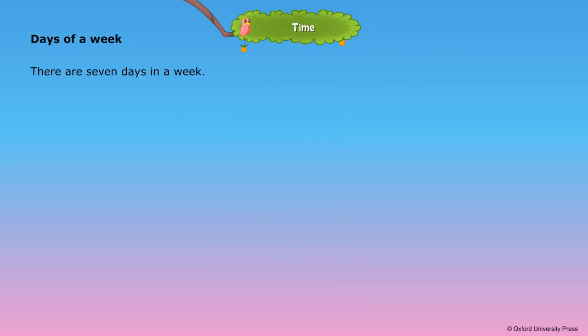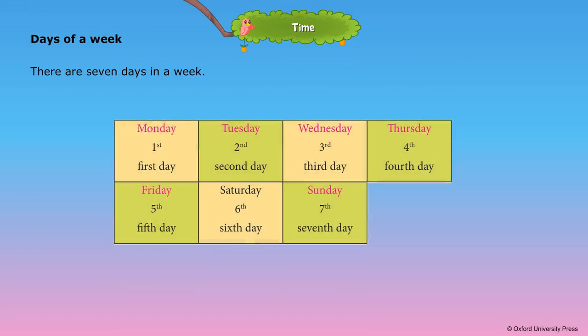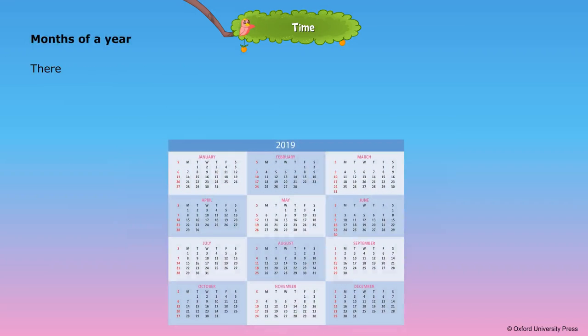Days of a week. There are 7 days in a week. Monday, 1st day. Tuesday, 2nd day. Wednesday, 3rd day. Thursday, 4th day. Friday, 5th day. Saturday, 6th day. Sunday, 7th day.